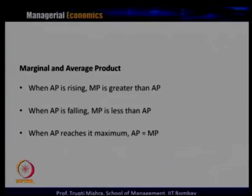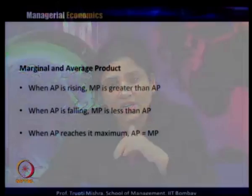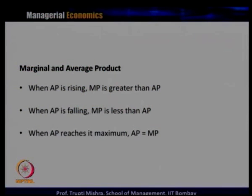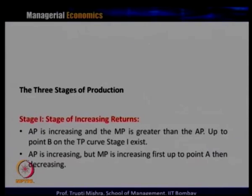The relationship between average and marginal product: when average product is increasing, marginal product is greater than average product; when average product is decreasing, marginal product is less than average product; when average product reaches its maximum, average product equals marginal product. Based on this relationship between average product, total product, and marginal product, three stages of production are identified.